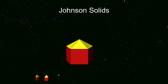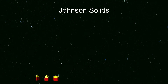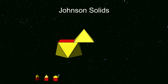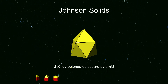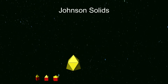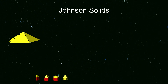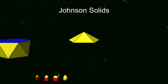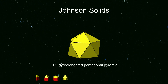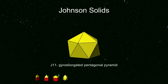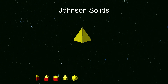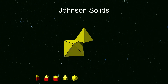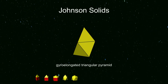Alternatively, an antiprism can be added to make a gyro-elongated square pyramid and gyro-elongated pentagonal pyramid. The gyro-elongated triangular pyramid isn't convex, so isn't included.